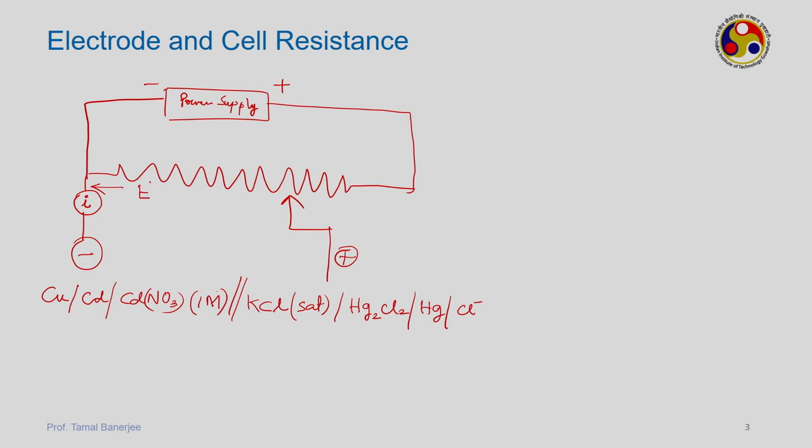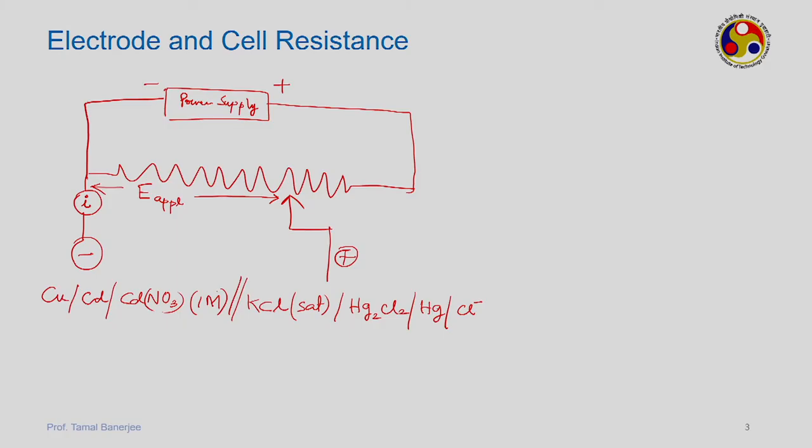When there is no load, the total applied potential is the open circuit voltage. The open circuit voltage is the potential difference across the two electrodes when there is no load — you add a voltmeter with infinite impedance so no current passes (I = 0). The voltage recorded is called the open circuit voltage.